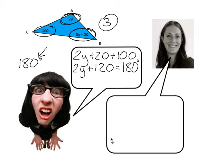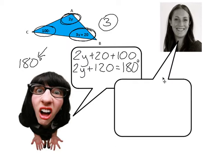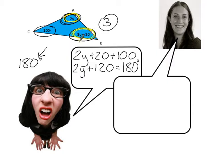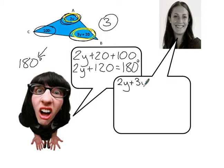Oh my God, Gertrude, this is completely wrong. It's a good job I'm here to help you out. You've made a classic mistake here in the fact that you have looked at this angle here — 2y — and you've added it to this angle here, which is 3y, but you haven't added them correctly. So what you need to do is write down each angle individually. So it's 2y plus 3y plus 20 plus 100.